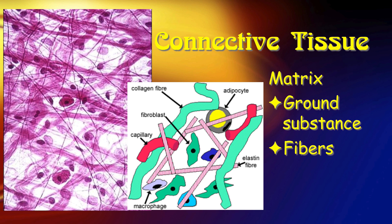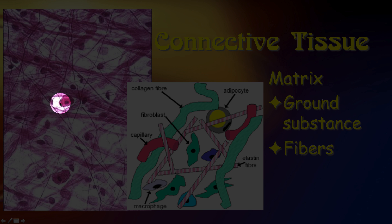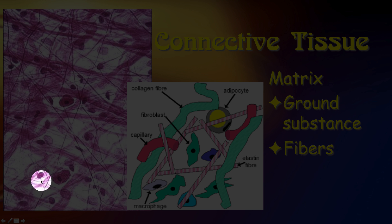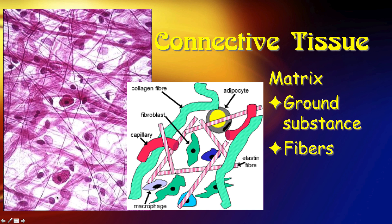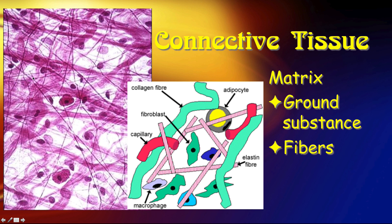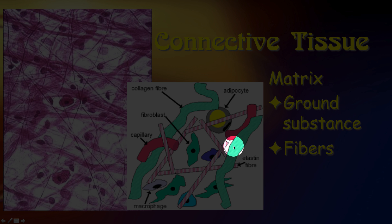So what's the matrix? Matrix can be broken down further into ground substance and fibers. If we look at this micrograph again, you see these cells — look for things with a darker spot in the middle; that's generally the nucleus. But everything else in this field of view is not cells. We have ground substance, which in this micrograph looks like empty space, and then we have fibers, which are these strand-like things going along here.